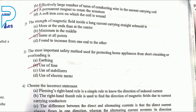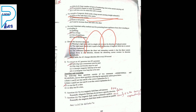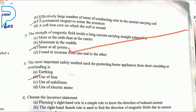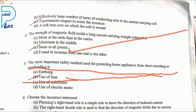The strength of the magnetic field inside a long current-carrying straight solenoid is the same at all points — all lines are parallel to each other in the solenoid. The most important safety method for protecting home appliances from short circuit or overloading is the use of fuse and MCBs.